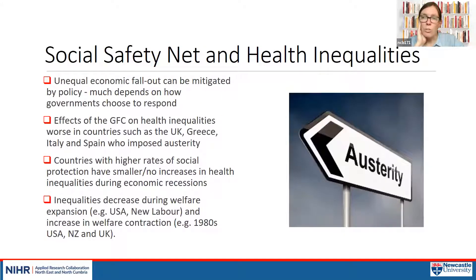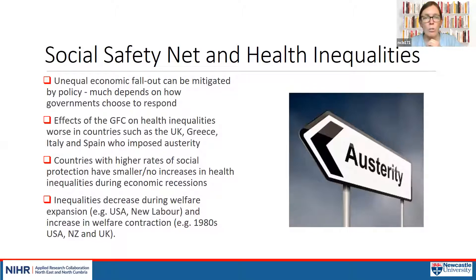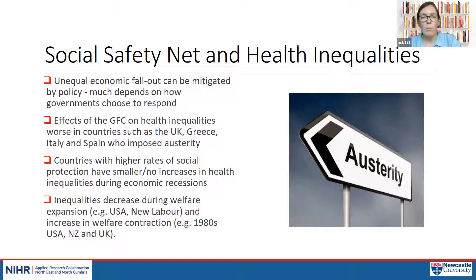Research has also shown that government policy is really important. There is debate about whether there should be more restrictions or opening up, but one thing we can control is the impact of unemployment on people's health — it doesn't have to lead to adverse health outcomes, because those outcomes are largely due to the poverty that follows from unemployment. Research shows that when you increase the value of welfare payments and social security, you can cut the link between unemployment and poor health and lead to health improvements.